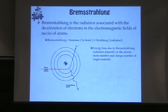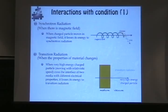The energy loss due to Bremsstrahlung radiation also depends on the atomic mass and charge number of the target material. Now we move to interactions that happen under special conditions. First, there is synchrotron radiation — radiation that occurs when there is a magnetic field. When a charged particle moves inside a magnetic field, it loses energy to synchrotron radiation. For example, inside the geomagnetic field, if an electron's energy is 10^9 eV, you would expect X-ray radiation coming out from this interaction.